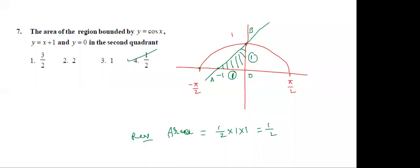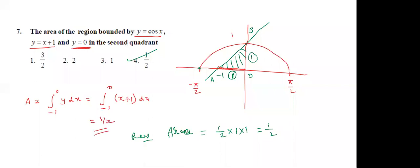Once again: y = cos x, y = x + 1, and y = 0, which means the x-axis. Alternatively, go to another method: area = ∫₋₁⁰ y dx = ∫₋₁⁰ (x + 1) dx. Solve this and you will get the answer 1/2 only.